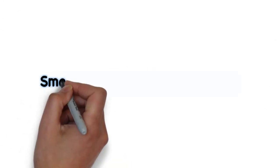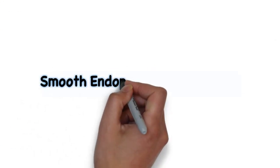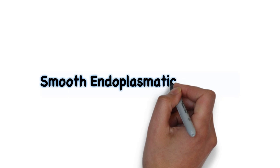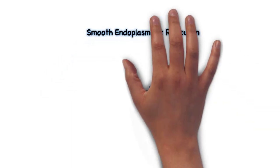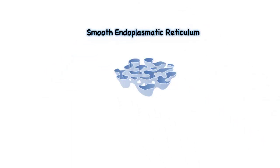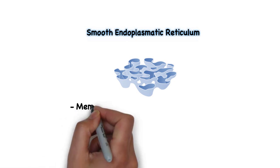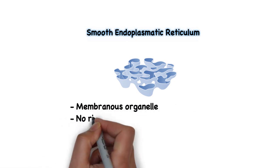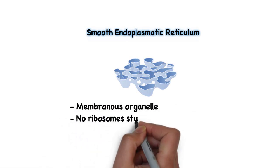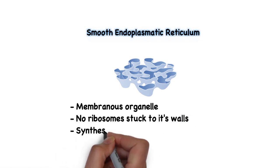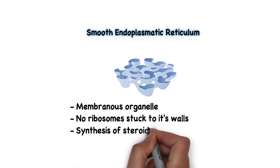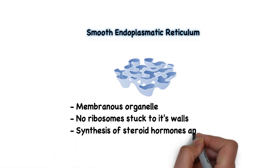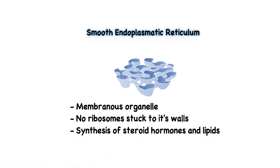Most cells also contain a smooth endoplasmic reticulum, which similarly to the rough endoplasmic reticulum is also a membranous organelle. However, it does not contain ribosomes stuck to its walls. This organelle is involved in the synthesis of steroid hormones and lipids.